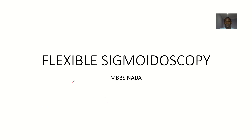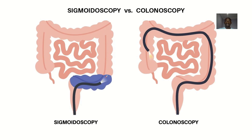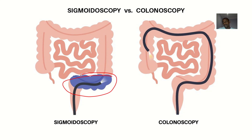Talking about the concept of sigmoidoscopy. Reflecting back to anatomy, there is a part of the large intestine known as the sigmoid. Sigmoidoscopy is an instrument specially designed to observe around the sigmoid — to see if there is any inflammation around the sigmoid, any ulcer, any inflammation, or cancer.